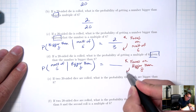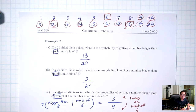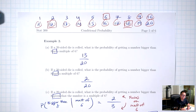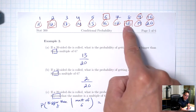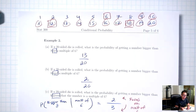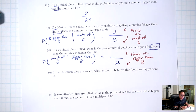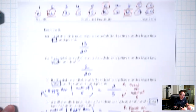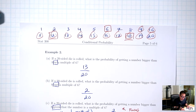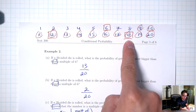Focusing just on the numbers bigger than 8 — the circles — how many are there total? Counting: 1 through 12, so 12. That's my bottom number. And then still focusing on the numbers bigger than 8, how many are multiples of 6? Focusing just on the circles, how many are multiples of 6? Those two — 12 and 18 — so 2. Answer: 2/12.